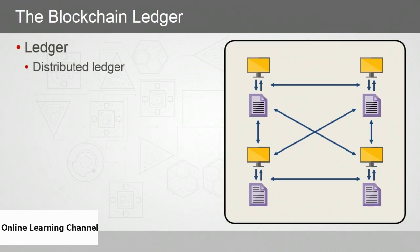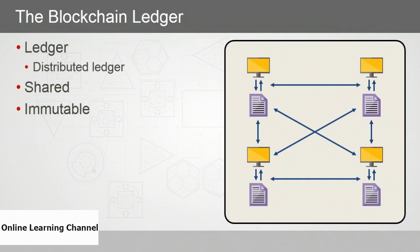The blockchain database is known as the ledger, and it's a distributed ledger, meaning that its contents are shared among the nodes of the peer-to-peer network. Everyone on the blockchain network has a copy of the ledger, making it immutable in the sense that it cannot be tampered with.